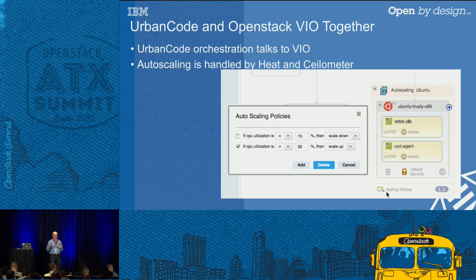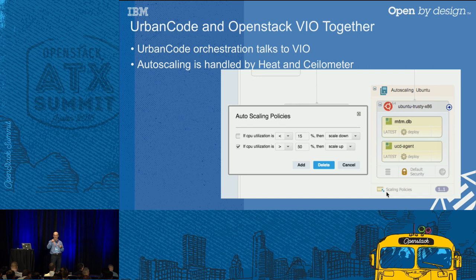One of the scaling policies we were talking about — Heat and Ceilometer were key parts of this. On the left-hand side you see one of the blueprint instances with a couple of agents that are deployable and customizable, serving an auto-scale policy that eventually scales out the environment up to the entire infrastructure you have.